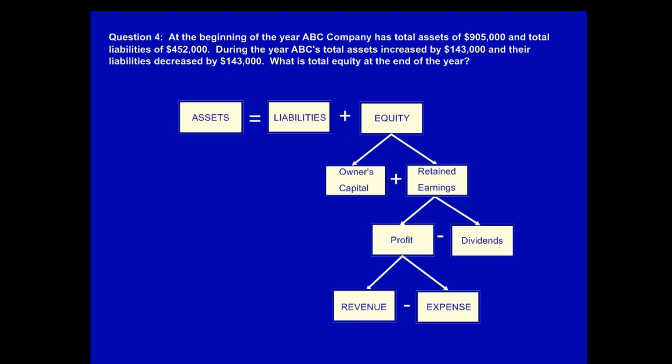Question 4. At the beginning of the year ABC Company has total assets of $905,000 and total liabilities of $452,000. During the year ABC's total assets increased by $143,000 and their liabilities decreased by $143,000. What is equity at the end of the year? You'll notice that this question is similar to question 3 in that we have information for three different periods: beginning, during, and end.